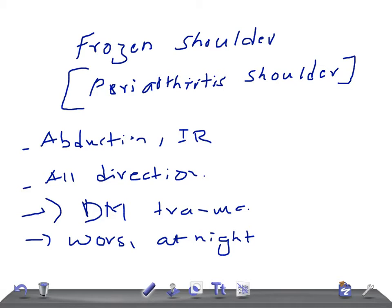What happens in a frozen shoulder is that the glenohumeral joint becomes painful and stiff because of a loss of resilience of the joint capsule. This loss of resilience is due to adhesions between its folds, and these multiple adhesions make the glenohumeral joint more stiff.